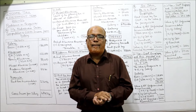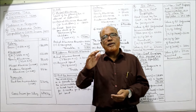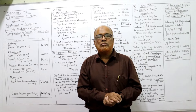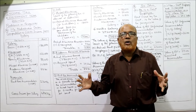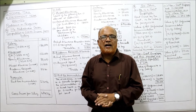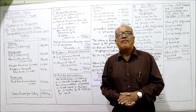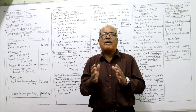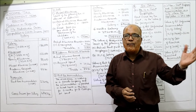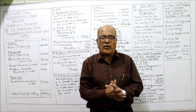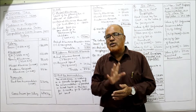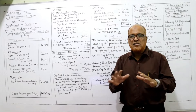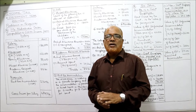Population less than 10 lakh is a small town — 7.5%. More than 10 lakh but up to 25 lakh is a medium town — 10% of salary. More than 25 lakh is a big town — 15% of salary. If the employer has taken accommodation on hire, the value is the least of: actual rent paid by the employer or 15% of salary.